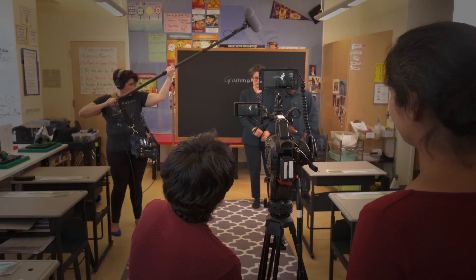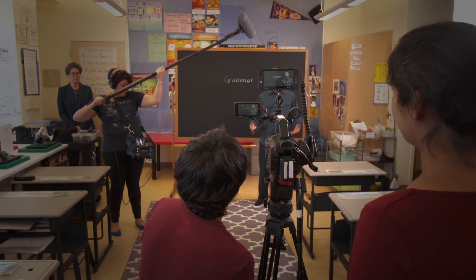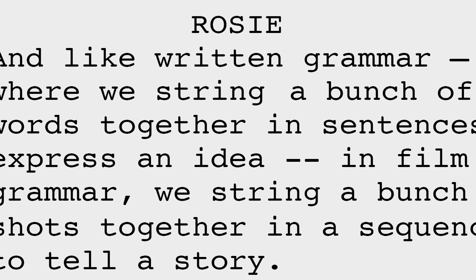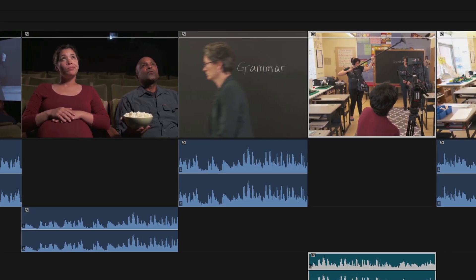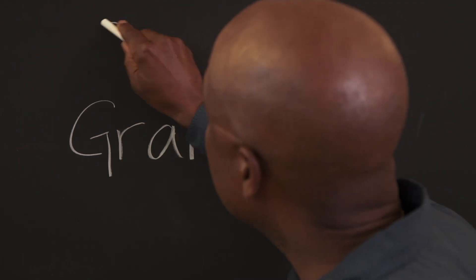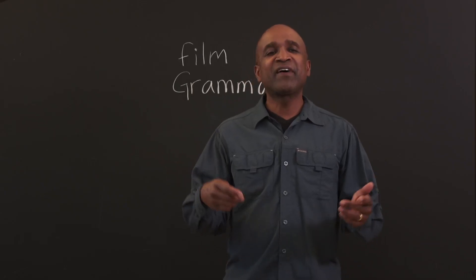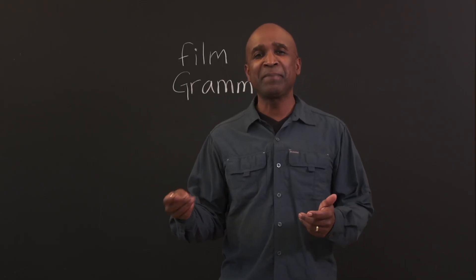Let's start again. Just like written grammar, film grammar is put together with different elements that help us to communicate. And like written grammar, where we string a bunch of words together in a sentence to express an idea, in film grammar we string a bunch of shots together in a sequence to tell a story. We use these elements to convey meaning and emotion, because film is an emotional medium.